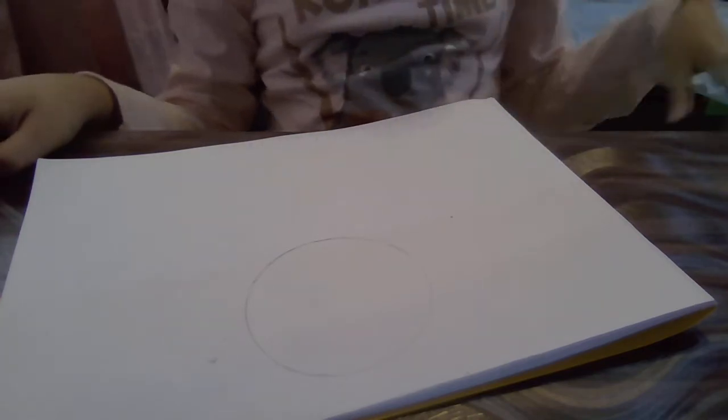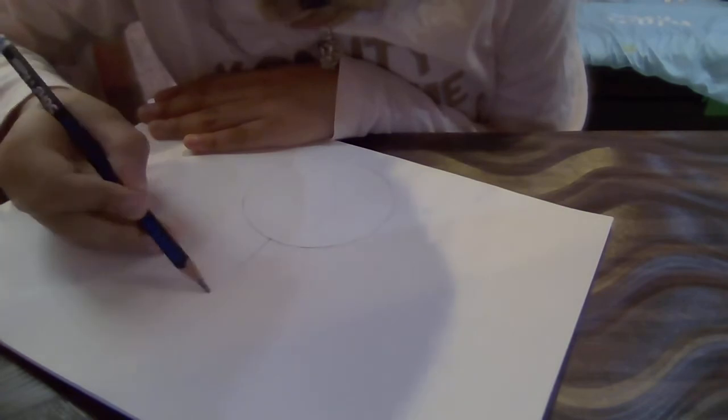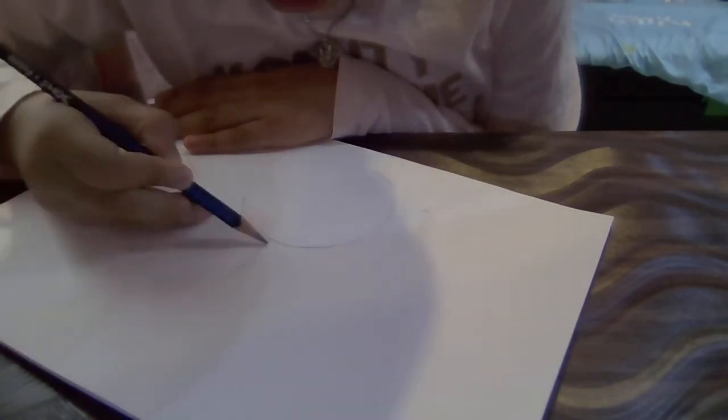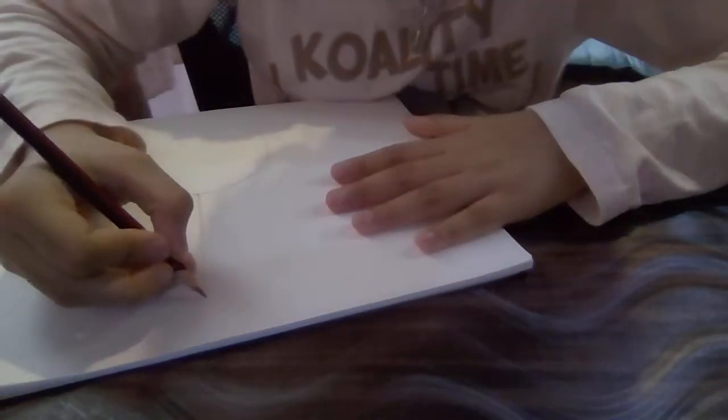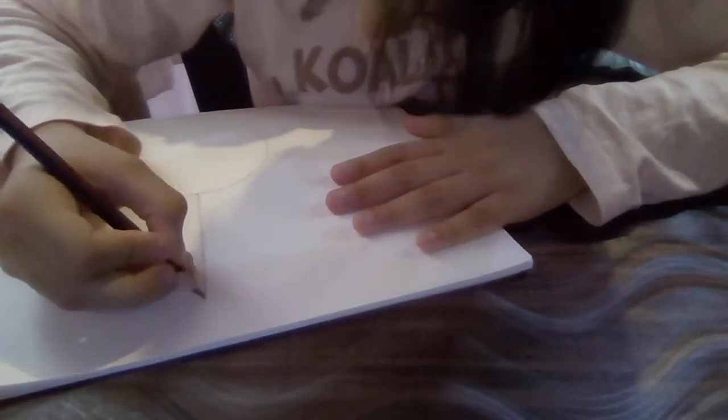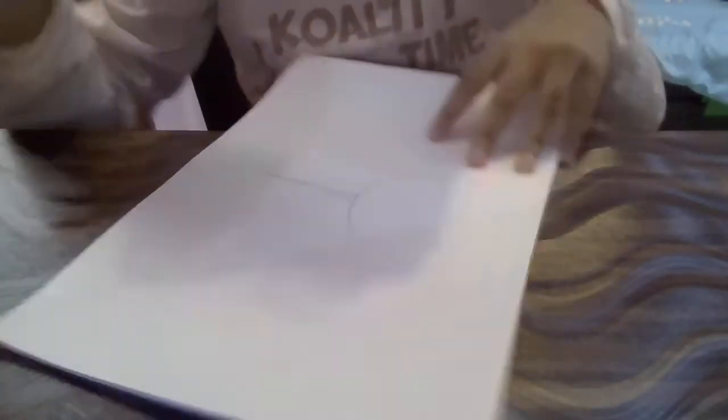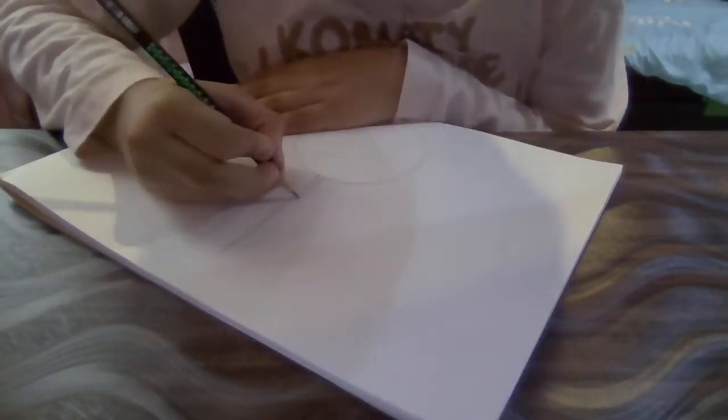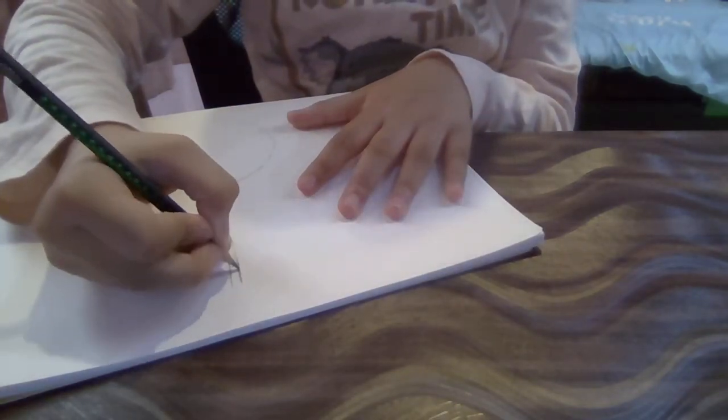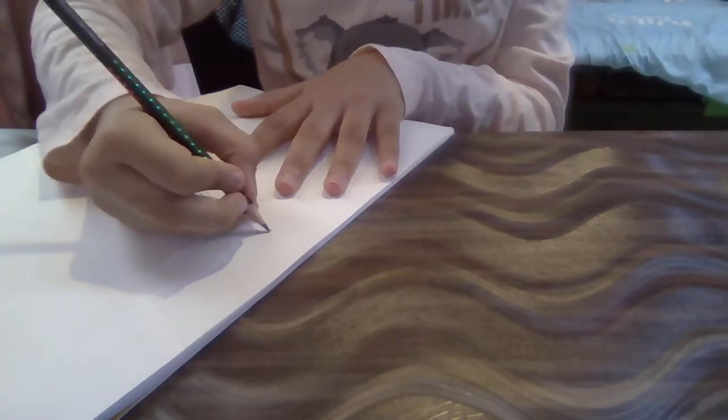Now there's your lollipop. Next you're going to make a line. Please avoid using a scale or ruler because you will never learn how to draw lines, and lines are the most basic thing of art. Now this is going to be the handle of the lollipop. So it will look like this.